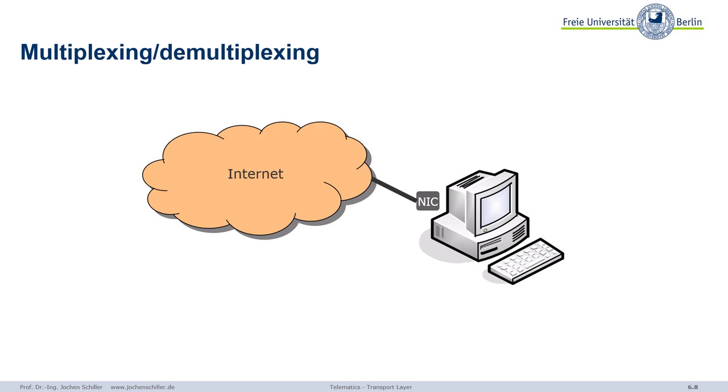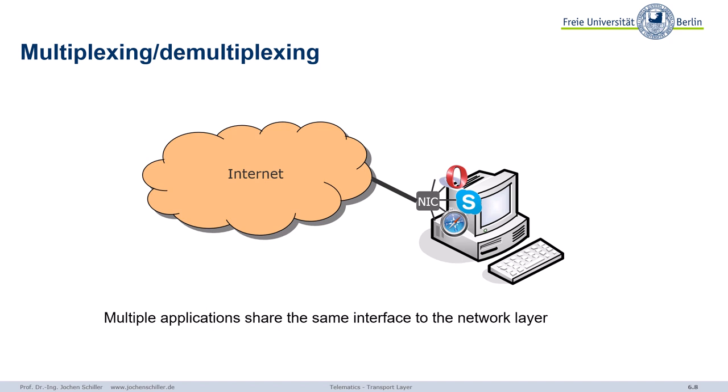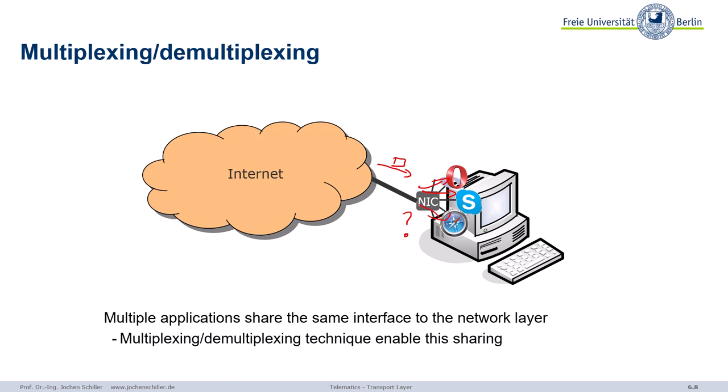We also need to discuss multiplexing and demultiplexing. We have many different applications sharing the same interface to the network layer — all with the same IP address but many applications running. A packet arriving at a certain IP address may need to go to a browser, messenger, or whatever, so we need multiplexing and demultiplexing techniques.